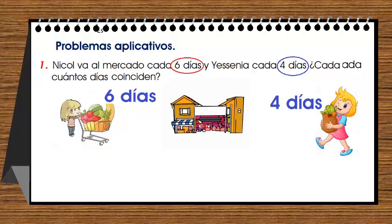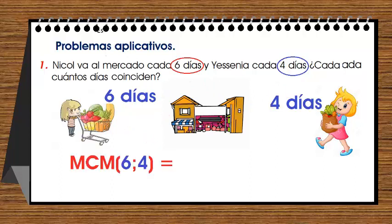Para que ese día vayan juntas, ese día tiene que ser múltiplo de seis y múltiplo de cuatro, múltiplo de ambos. En otras palabras, vamos a sacar el mínimo común múltiplo de seis y cuatro. El MCM de seis y cuatro es doce.